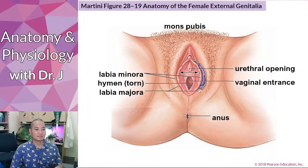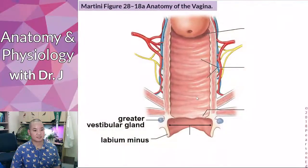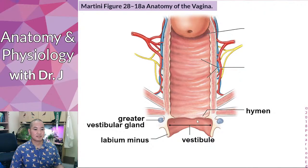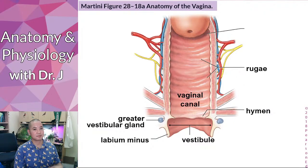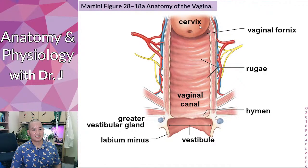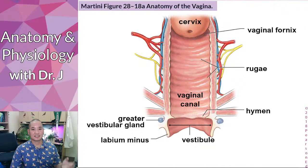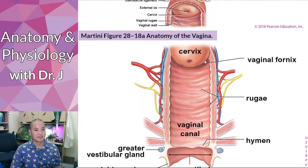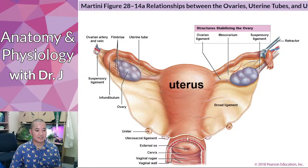Past the vestibule and into the vaginal entrance, once you pass the hymen you are in the vaginal canal. The canal has rugae — folds that allow for expansion, like the stomach. Further in, just before the uterus, is the vaginal fornix. The bottom of the uterus is called the cervix — the neck of the uterus.